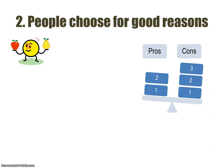Number two: people choose for good reasons. Every time a person makes a choice, they have a good reason for making that choice. They have weighed the pros and cons, and even if you don't agree with someone's choice, their choice was made for a good reason to them.